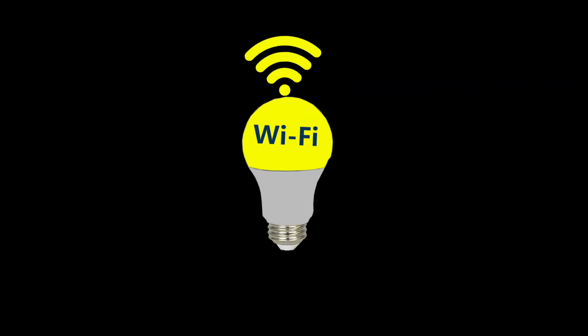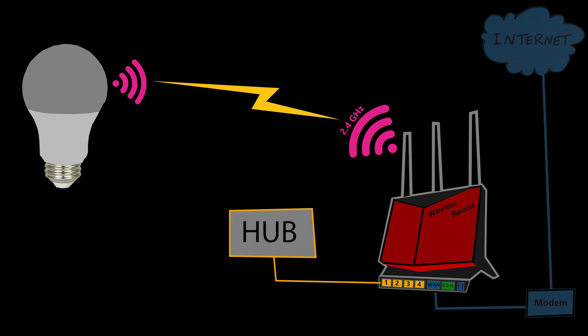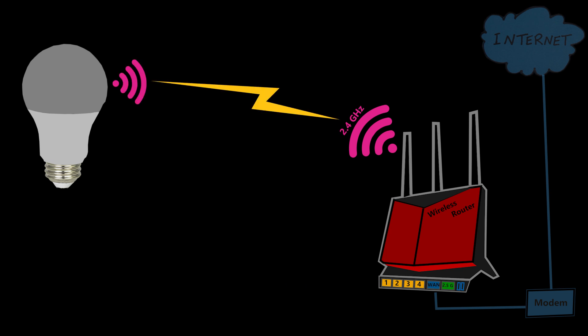Now let's take a closer look at our Wi-Fi IoT devices. As we saw with the LED light bulb, it wasn't that difficult to connect it to the network. Besides, there was no need to have a hub — I could directly connect it to my wireless router, which is good.